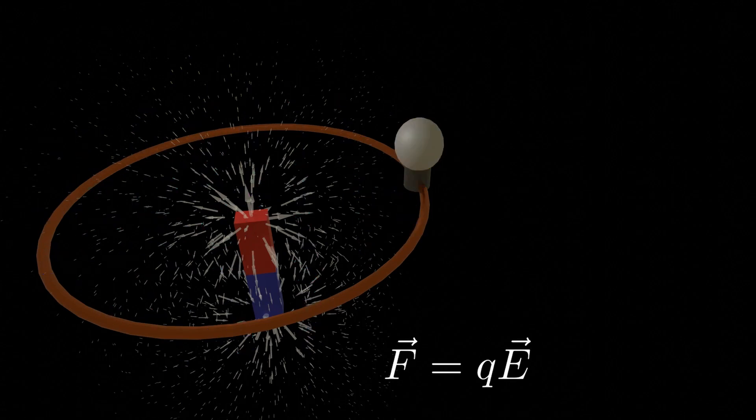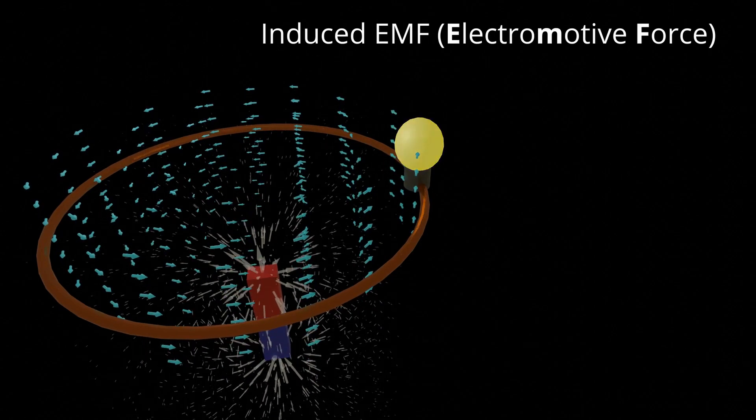The electrons aren't moving so Barry can't do anything, but Emily can. So the electrons feel a force and once again we create current. This time from Emily. We call this induced EMF.